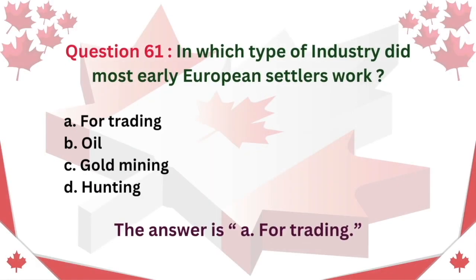Question 61: In which type of industry did most early European settlers work? A. Fur trading. B. Oil. C. Gold Mining. D. Hunting. The answer is A. Fur trading.